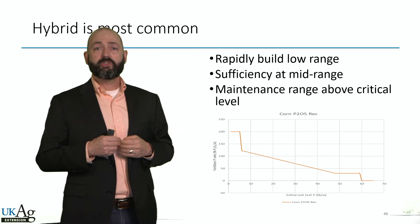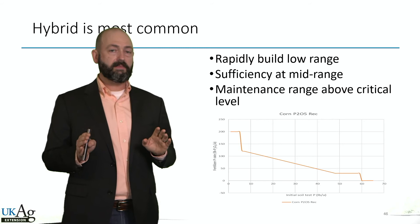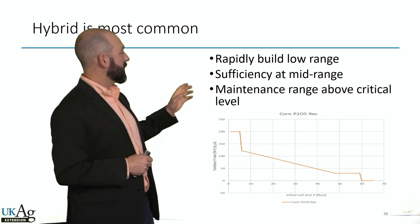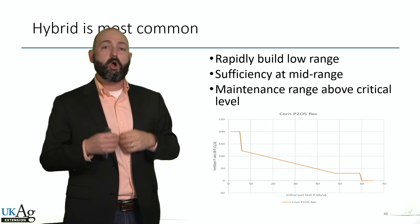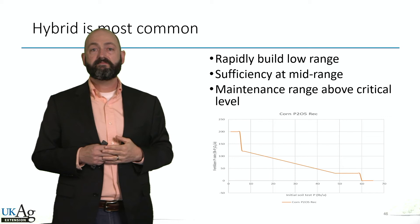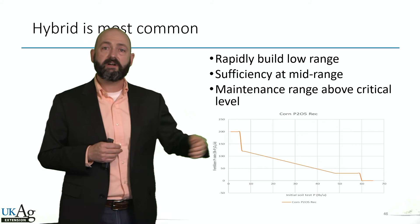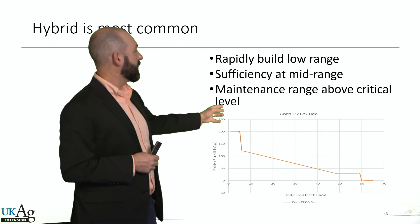With private lab recommendations you're going to spend a little more money and it won't be as profitable, but there's no chance of yield loss or your crop not looking good — because a private lab doesn't want to risk your crop looking bad. In the hybrid approach, you rapidly build a little bit at the low end to overcome that soil buffer capacity, get closer to sufficiency in the mid-range, and then add some maintenance as you approach the critical level.